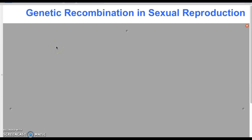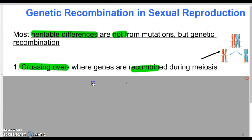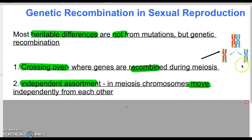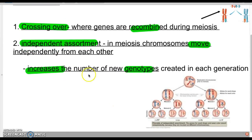Variation can also exist through sexual reproduction. Heritable differences not coming from mutations come from genetic recombination in meiosis — specifically crossing over, which happens when we make sperm and eggs, recombining and changing our genetic information. Independent assortment also allows chromosomes to independently separate during meiosis so you get half the amount. Both of these processes increase why we have different variations in our genes and new genotypes.